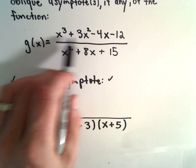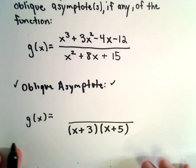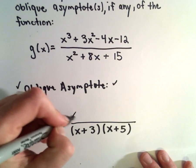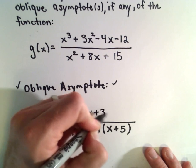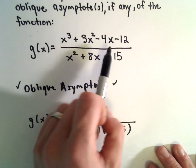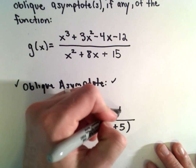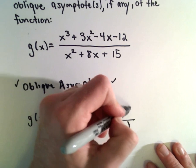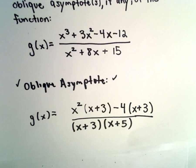For the numerator, we're going to use factoring by grouping. If I look at my first two terms, x to the third and 3x squared, I could factor x squared away and be left over with x plus 3. If I look at the last two terms, negative 4x minus 12, we could factor out a minus 4, and again we'll be left with x plus 3.